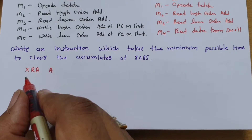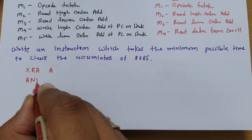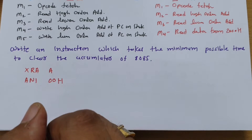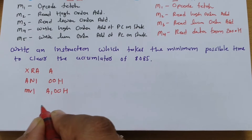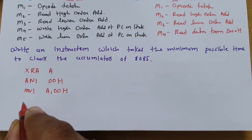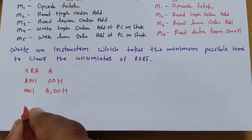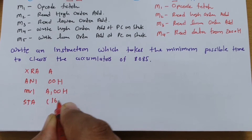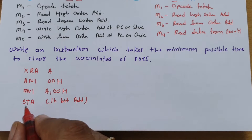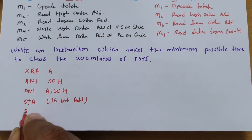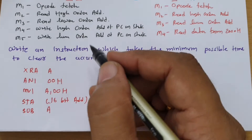Let me mention the different ways first, and then we will see how much time each takes. The second way is ANI 00H — ANDing the accumulator with 00H. Another way is MVI A, 00H. Another way is to load data from a memory address using LDA, where the data at that address is 0. And by subtraction — if you do SUB A, subtracting A from A — it will make it 0. These are the different ways to clear the accumulator.